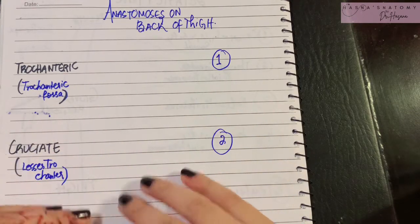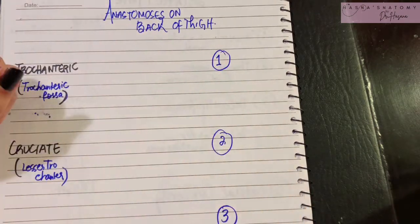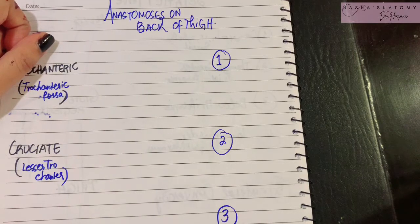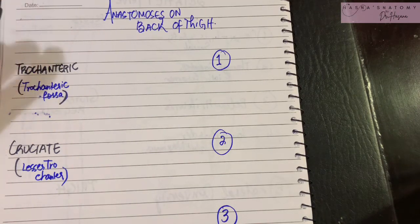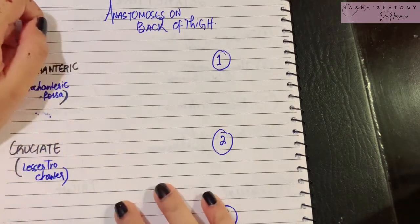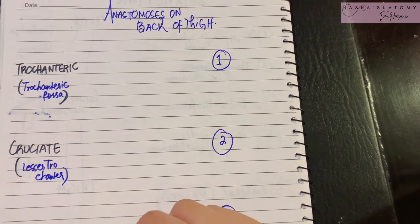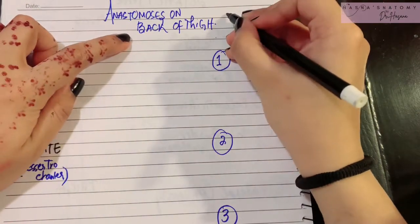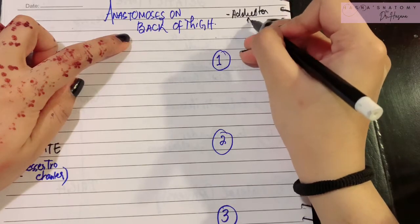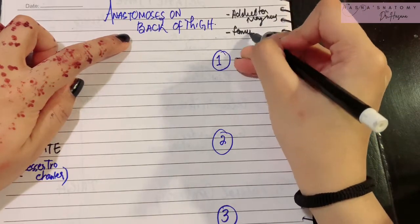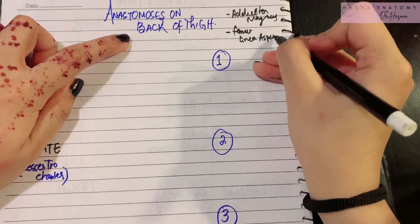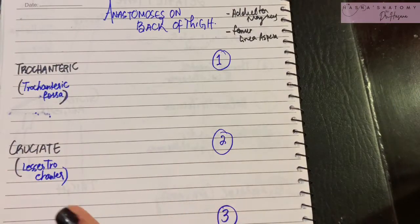I'd like to give you a brief outline of the anastomosis at the back of the thigh. Basically, behind the thigh on the entire femur bone and the adductor magnus muscle — these two are the key important locations where the entire anastomosis of the back of the thigh is occurring. The anastomosis is located on the adductor magnus and the femur bone, specifically the linea aspera, on the posterior side.